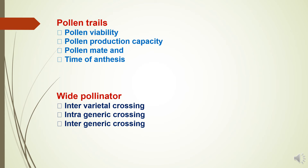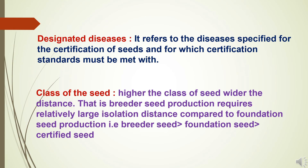The fourth factor is white pollinator, including inter-varietal crossing, intra-generic crossing, and inter-generic crossing. The sixth factor is designated diseases, which refers to diseases specified for the certification of seeds and for which certification standards must be met.